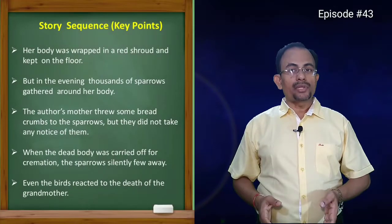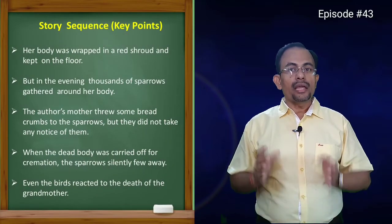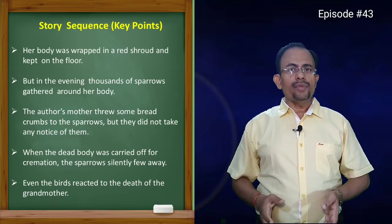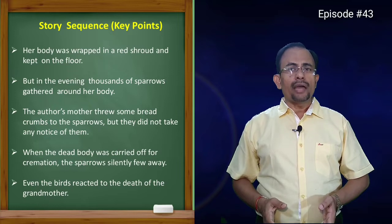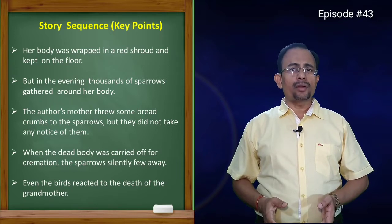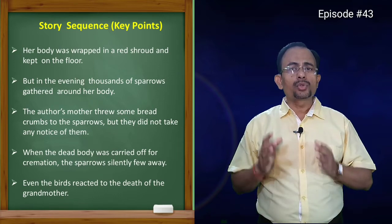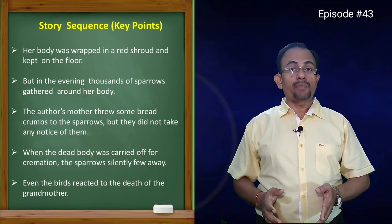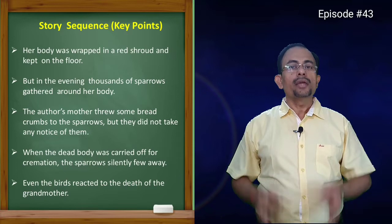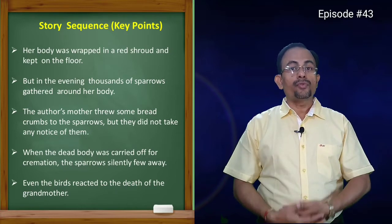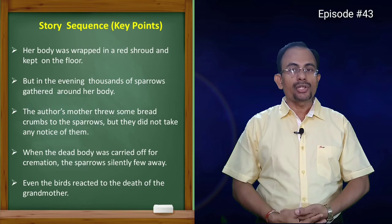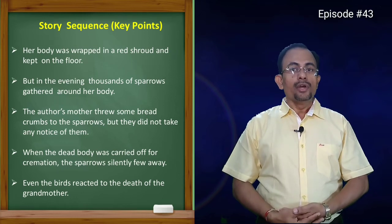Her body was wrapped in a red shroud and laid on the floor. But in the evening, when a stretcher was brought to carry her dead body, golden light filled her room and veranda, and thousands of sparrows sat silently around her body. The author's mother threw some bread crumbs to the sparrows, but they did not take any notice. When the dead body was carried off for cremation, the sparrows silently flew away — even the birds had reacted to the death of the grandmother.